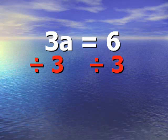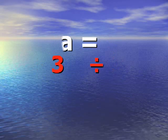So we divide the right and left side of the equal sign both by 3, all the elements. 3a divided by 3 makes a, and 6 divided by 3 makes our answer, which is 2.